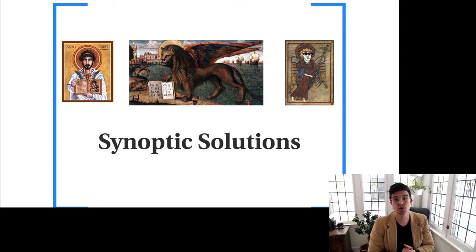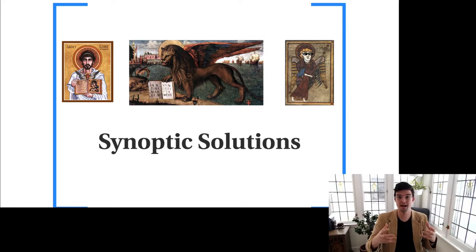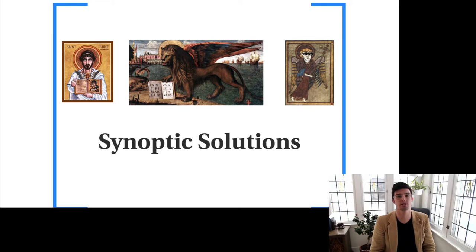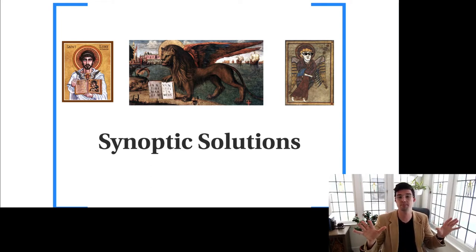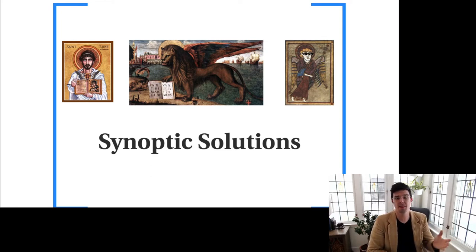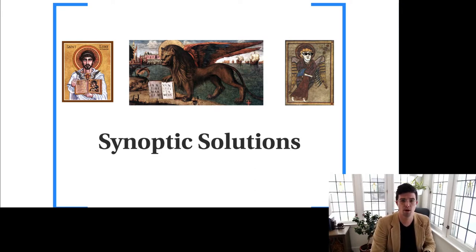In the last video, we introduced the synoptic problem — who is copying from whom in the gospel composition scenario? Which gospel was written first, second, or third? In this video, we're going to address the two main solutions to the synoptic problem. These two solutions represent what about 99% of New Testament scholars hold as answers to the synoptic problem, and then we're going to look at evidence in favor of each solution separately.